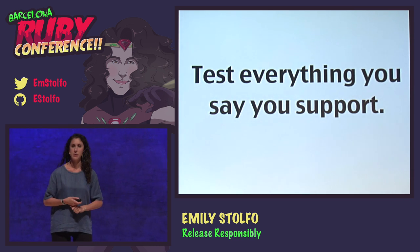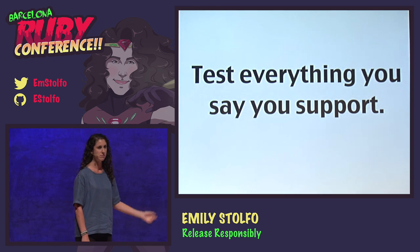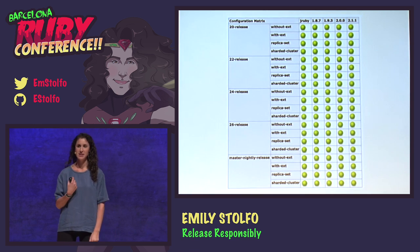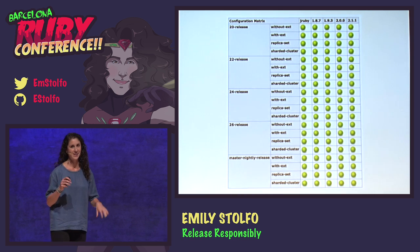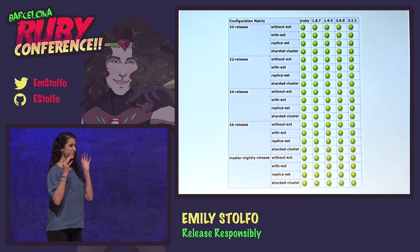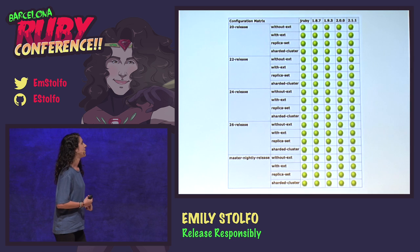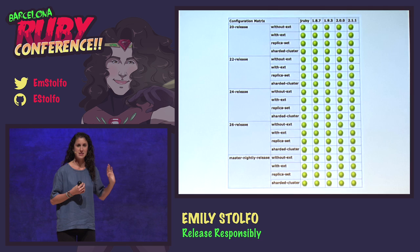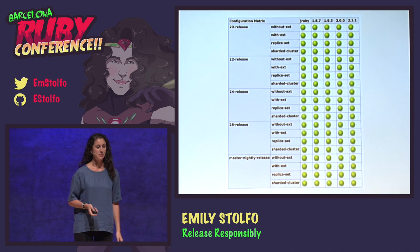Test everything you say you support — don't spot-check. Don't just check on 2.1 and maybe 1.8.7 and throw JRuby in. It's important to have a matrix. We use Jenkins with an enormous matrix that takes a long time to run, but it's really important for hitting every single combination: the server, replica sets without the C extension, with the C extension, different versions of Ruby. The driver wouldn't work without this.